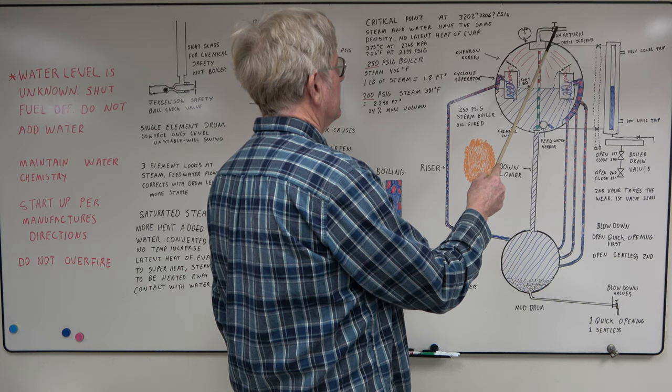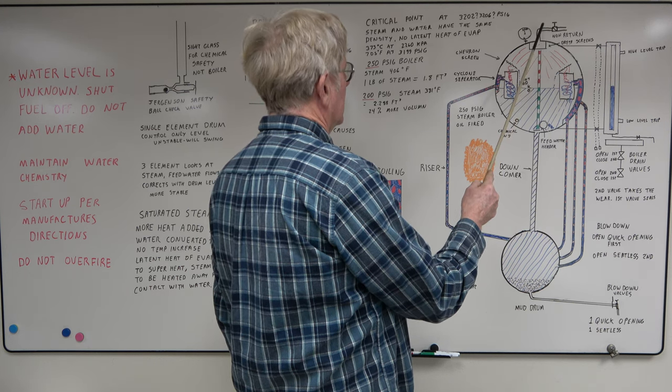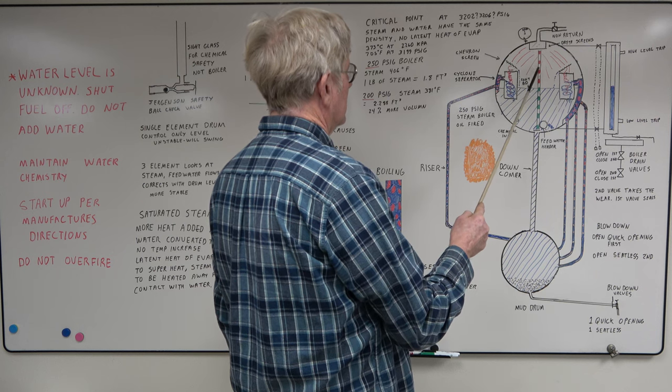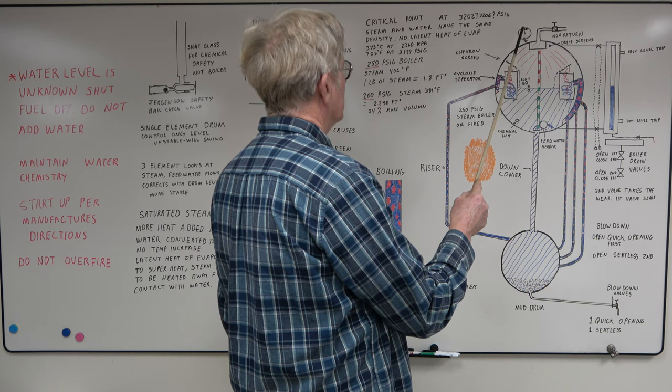Up here we have a non-return valve. It's a check valve with a hand-wheel gag. It keeps any steam from coming back in the boiler, which could be a catastrophic failure. And we have a pressure gauge maintaining, watching the pressure on the boiler.